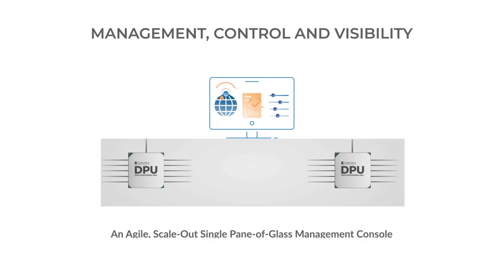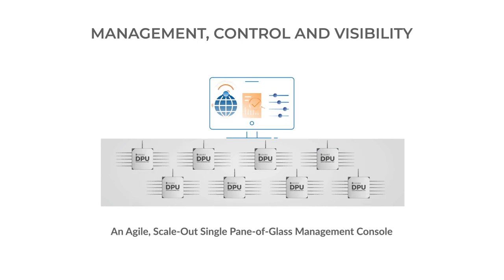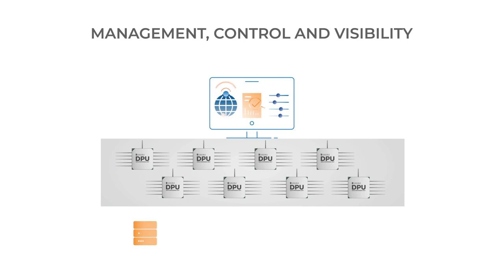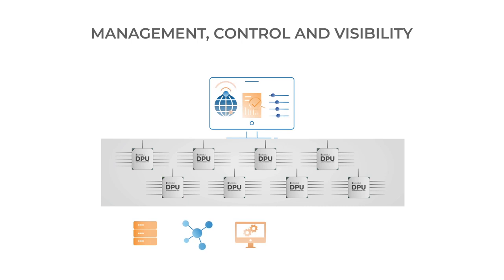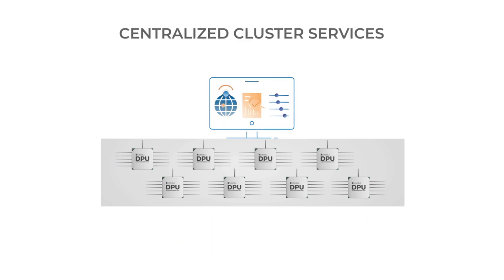The cluster services offer an agile, scale-out, single-pane-of-glass management console responsible for managing storage services — such as adding and removing nodes, setting volume attributes, quality of service, snapshots, and clones — as well as network services, system telemetry and health monitoring, security services such as authentication, authorization, and auditing, and support services. These cluster services are accessed through REST APIs that allow integration into standard orchestration systems such as Kubernetes CSI plugins.